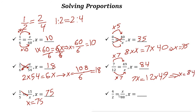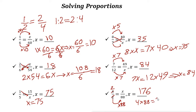Last one. Cross multiplication: 4 times 88. You could also simplify this one first — divided by 2 is 1, and divided by 2 is 2. Now 2 over 1 is the same thing as x over 88. So 1 times 88 is 88, and 2 times 88 is 176. Using cross multiplication: 4 times 88 equals x times 2, and if you divide both sides by 2, the answer is 176.